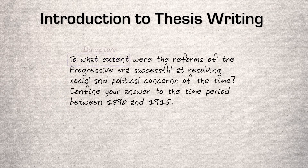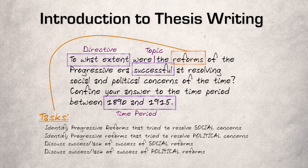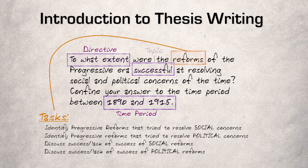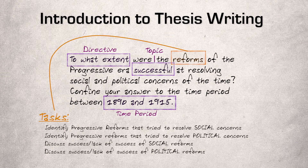The first step is annotating the question and understanding what the question is asking. We've done that here. You can see that the directive is 'to what extent,' the time period and constraints are from 1890 to 1915, the topic of the essay is the success of progressive reforms, and the tasks that need to be completed are listed below.